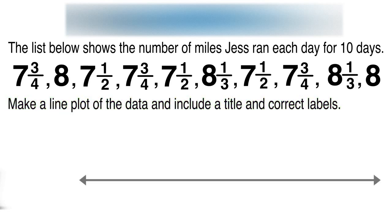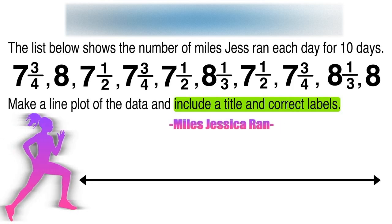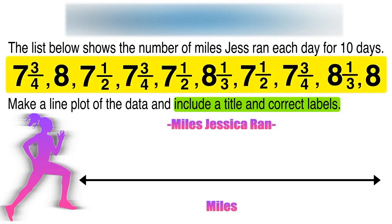The first thing we need for a line plot is a horizontal line with an arrow point on each end. Our data needs context, so we need a title — we can call this 'Miles Jessica Ran.' Our unit of measurement is miles. Now we are ready to use our data.